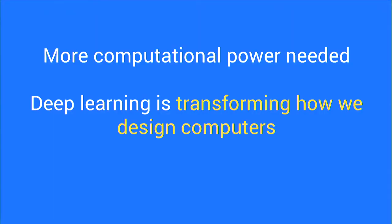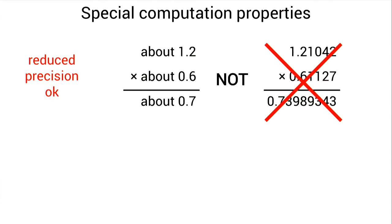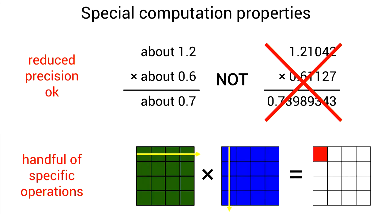These machine learning algorithms are really different from traditional kinds of computer software. They have two really nice properties: first, they are able to deal with very reduced precision — you can carry out all the computations to just one decimal digit of precision and that's fine with the algorithm. Second, they're all made up of compositions of a handful of very simple primitives — essentially matrix multiplies, vector dot products, dense linear algebra at reduced precision. So if you can build computing devices specialized for reduced precision linear algebra, you can effectively save a lot of energy and make much more powerful computers for the same amount of energy input.